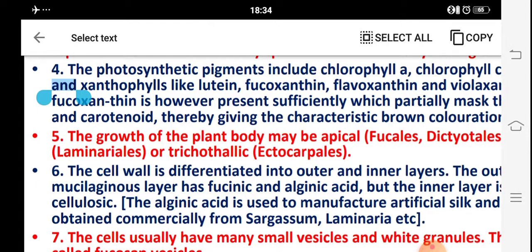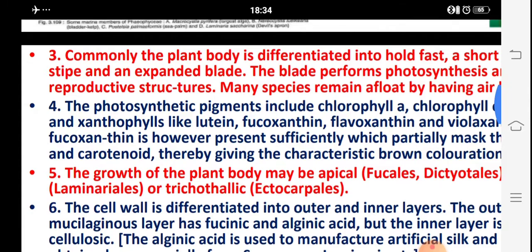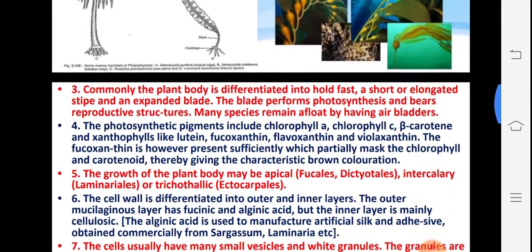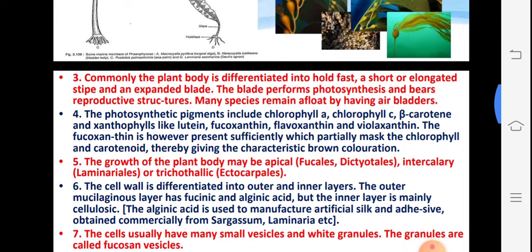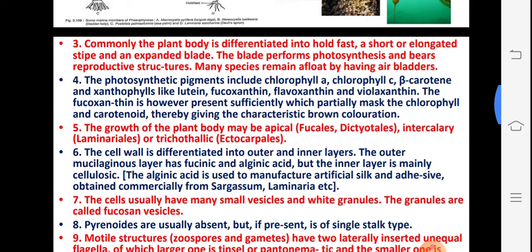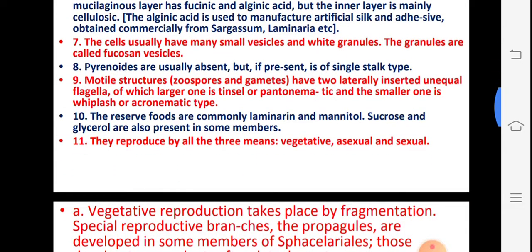The photosynthetic pigments generally include chlorophyll a, chlorophyll c, xanthophylls — lutein, fucoxanthin, and flavoxanthin. Important highlighting characters: pyrenoids are present but if present they are single-stalked type, and usually pyrenoids are absent. The pyrenoid is present in the chloroplast.